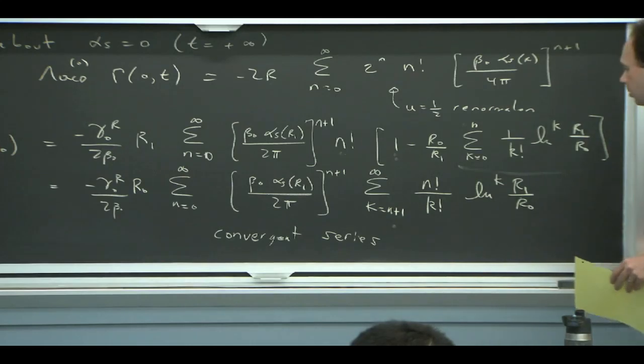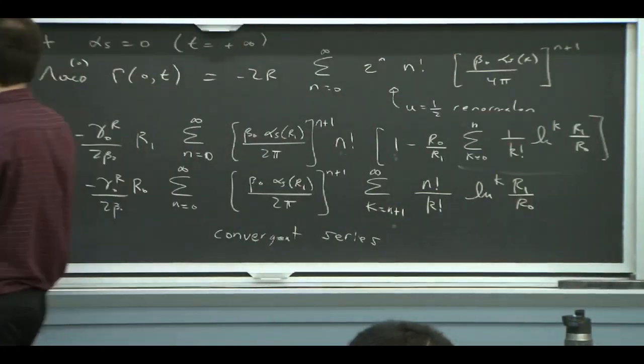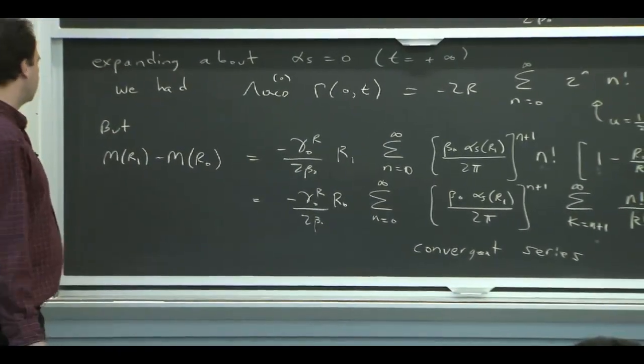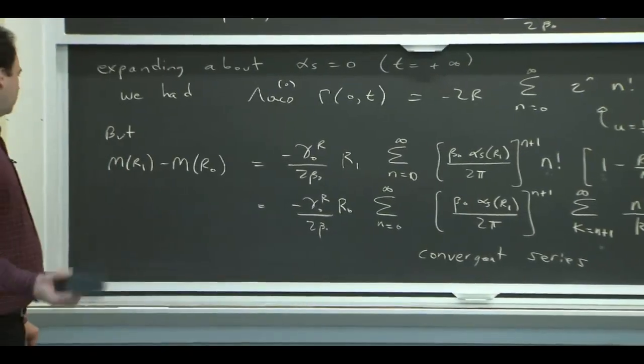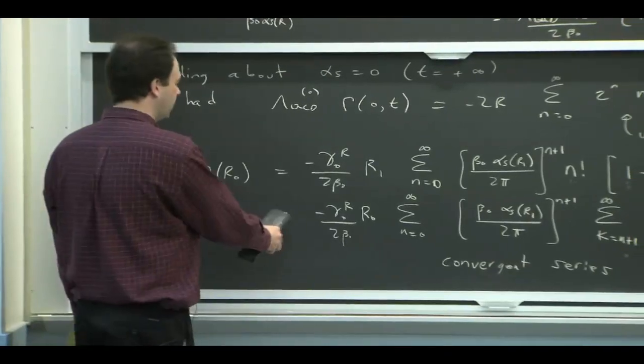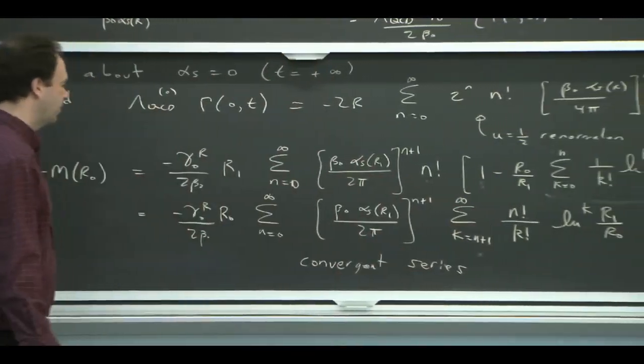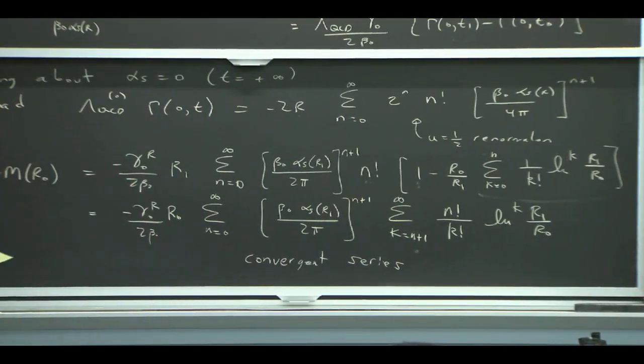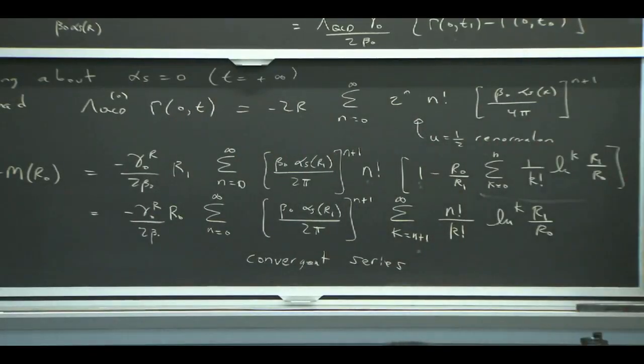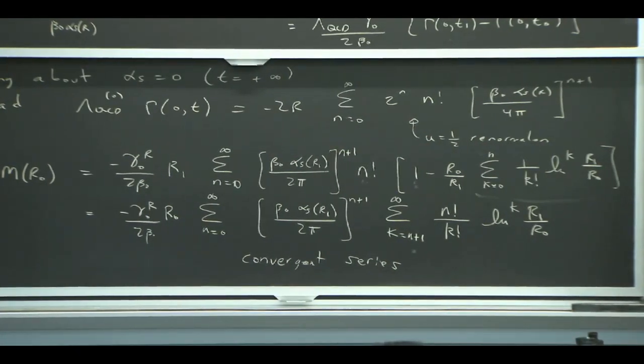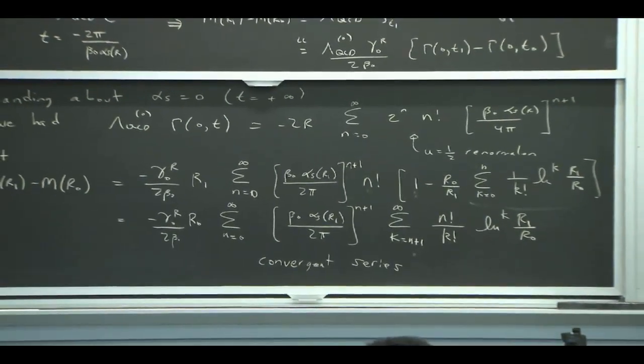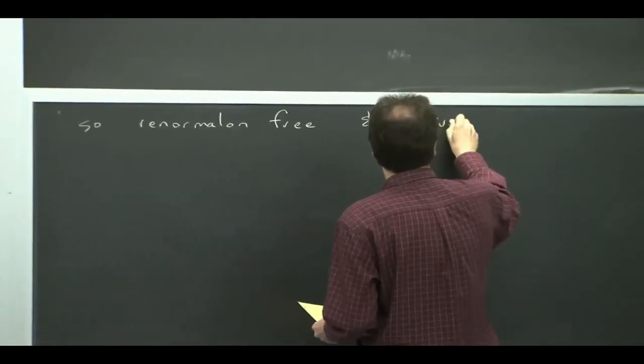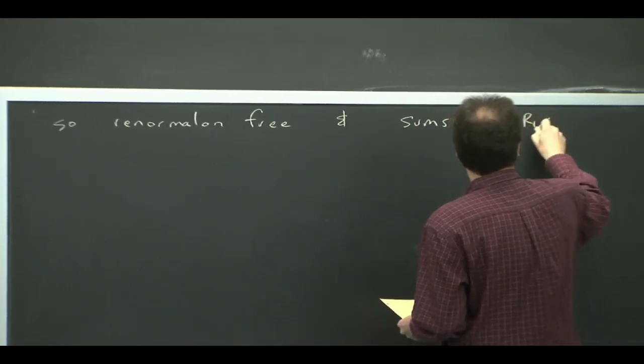You can see that the n factorial is being tamed by another factorial growth, which is always of a greater power, n plus 1. This is a number less than 1, and beta naught alpha over 2 pi times the log is also something that's less than 1. It's exactly the thing that you sum up when you're running the coupling. So this is a convergent series. Basically the physics of it is, we have this mass that didn't have a renormalon, but it had an arbitrary scale. What the renormalization group allows us to do is move to another scale. When we move to another scale, it better be that we don't reintroduce the renormalon. The fact that I can write this as a convergent series shows very explicitly that I'm not having that problem.